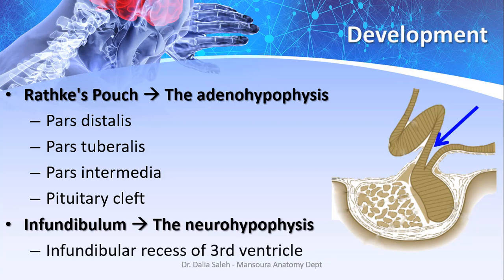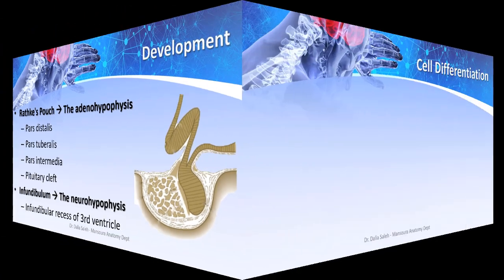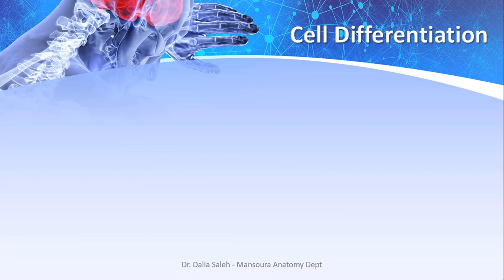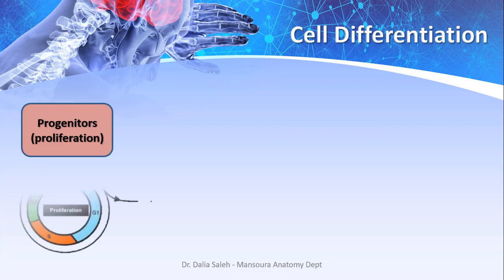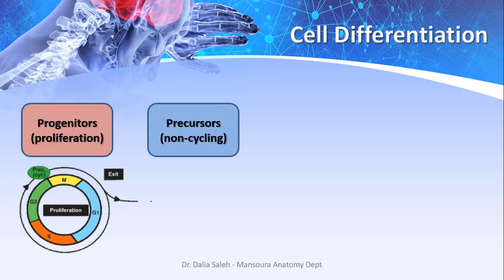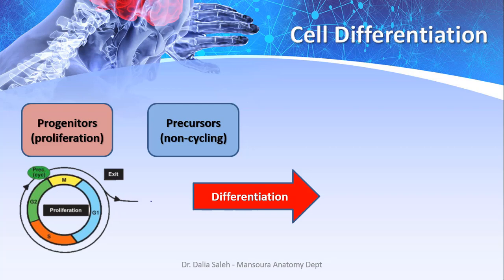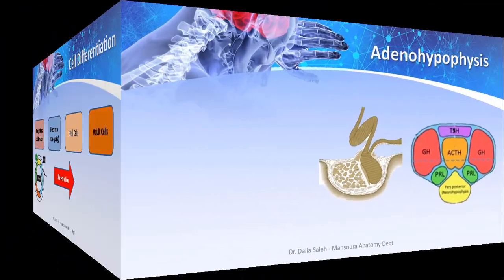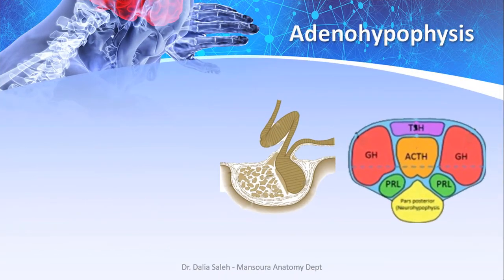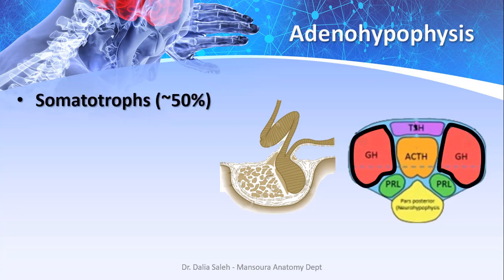Regarding cell proliferation and differentiation: we start with pituitary stem cells — the progenitors — which undergo extensive proliferation, then exit the cell cycle to form committed precursors. These non-cycling precursors undergo differentiation to give fetal pituitary cells and finally adult pituitary cells. In the adenohypophysis we have five types of hormone-secreting cells. The somatotrophs represent about 15% of total pituitary cells; they lie at the lateral region of the gland and secrete growth hormone.